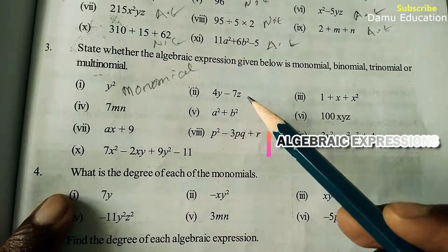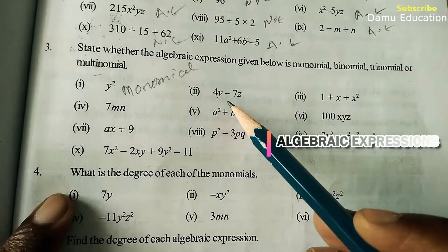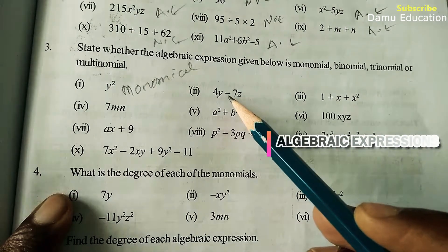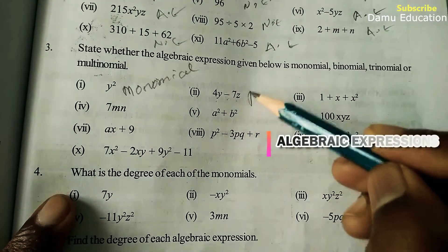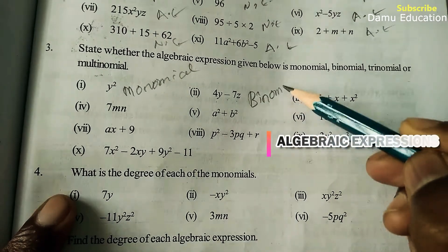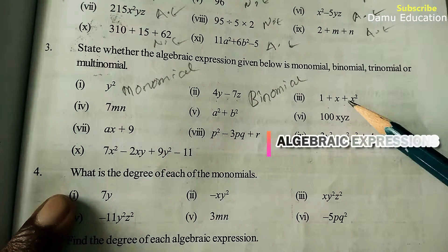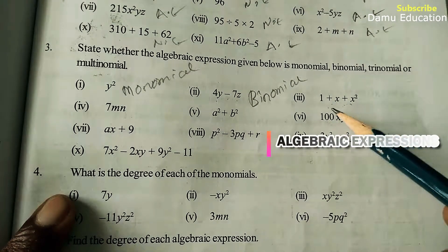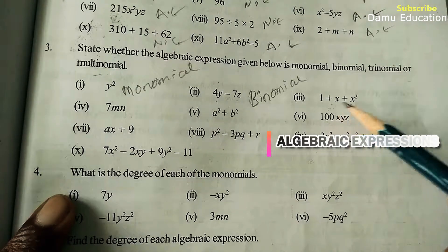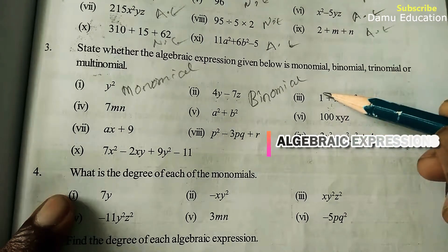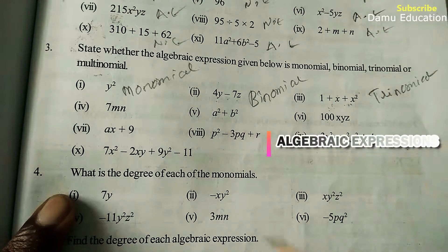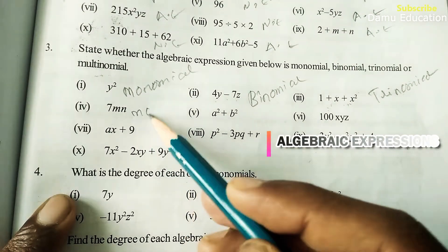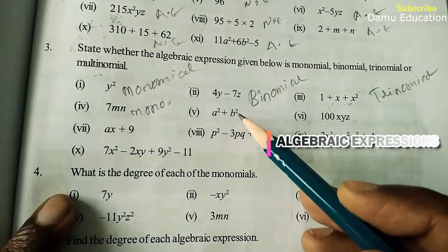Next, 4y and 7z — if there is a single plus or minus present, that gives one term and another term, so two terms means it is binomial. If two plus or minus signs are present, that gives three terms, making it a trinomial. 7mn has no plus or minus, so it is monomial.